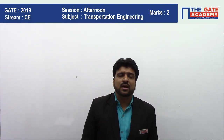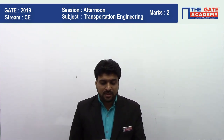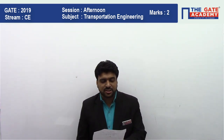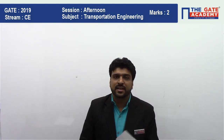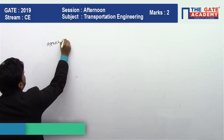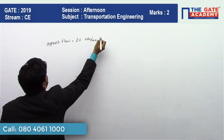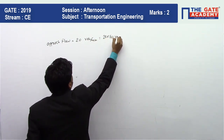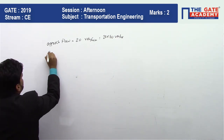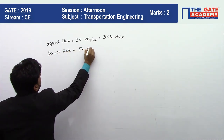The question is from traffic engineering and carries two marks. The question states: the uniform arrival and uniform service rates observed on an approach road to a signalized intersection are 20 and 50 vehicles per minute. So the approach flow is 20 vehicles per minute, which we can also convert to 1200 vehicles per hour. The service rate is 50 vehicles per minute.